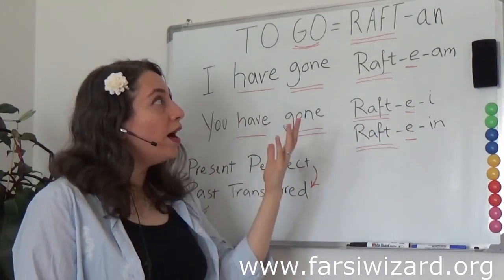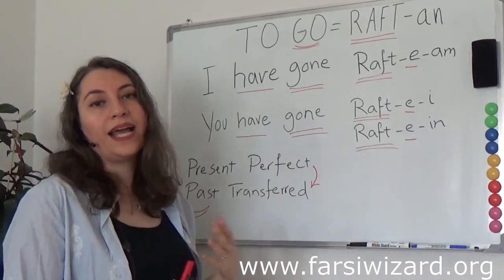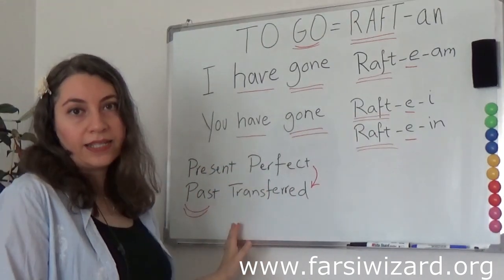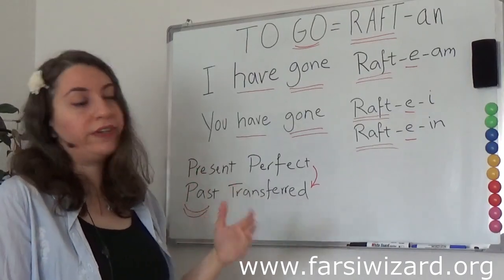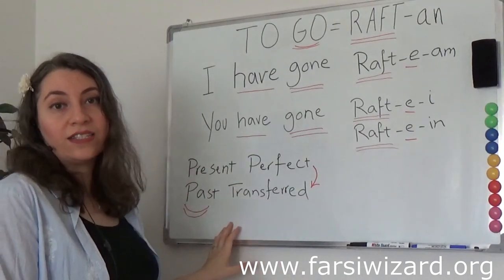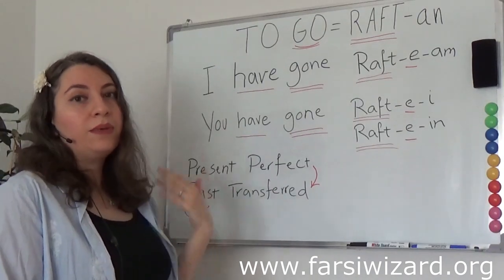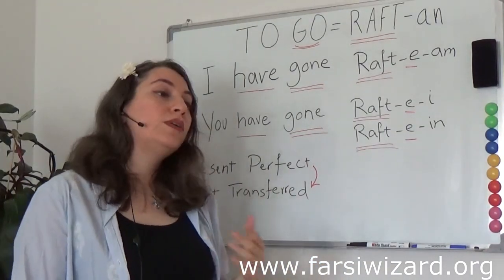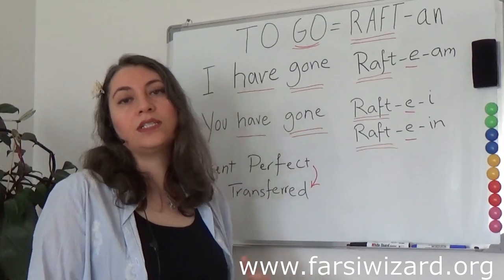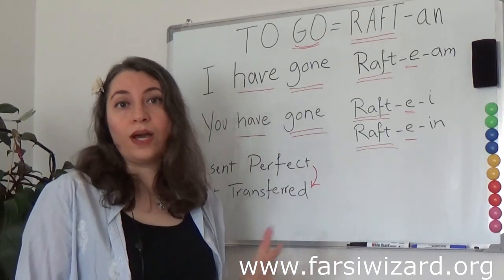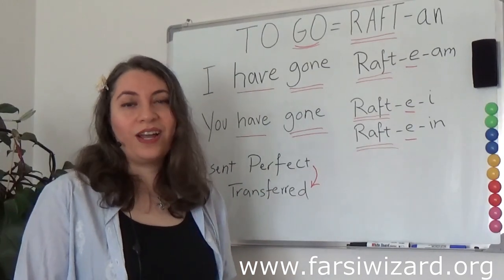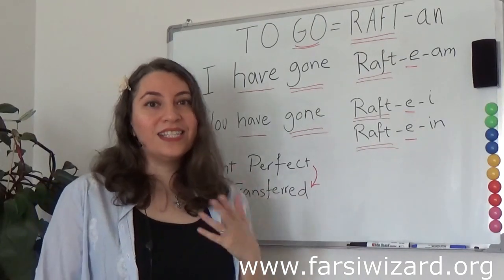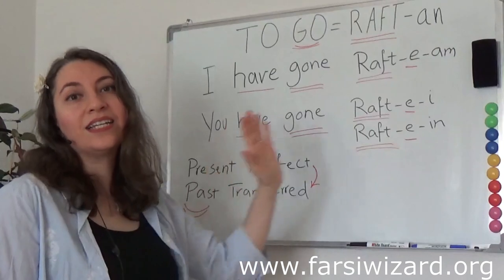You may ask me why the past stem is connected to present perfect tense. The answer is simple. Present perfect in reality is a variation of past. So we don't refer to this tense as present perfect — we refer to it as past transferred. It means something happened in the past, but the effect is transferred into the present. For example, in English when you say 'I have turned on the light,' this means you flipped the switch two hours ago, but there is still light in your room. The action took place in the past, but the effect is still valid for the present time. This is why we refer to this verb tense as past transferred.